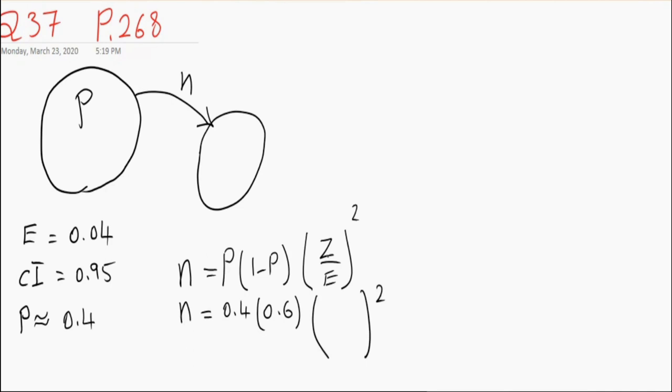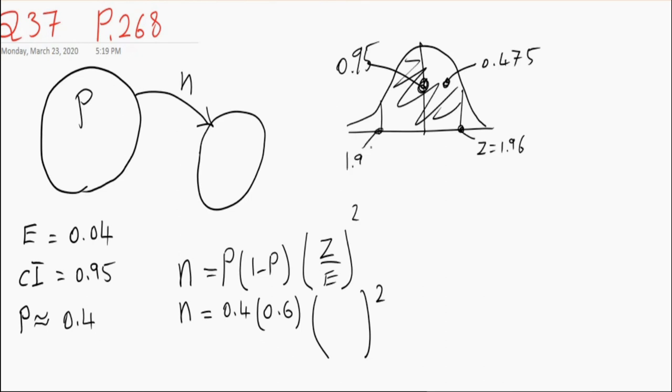The best estimate that we have is 0.4 multiplied by 0.6. And now in a normal distribution we want to have 95% confidence. Therefore this area should be 0.95. Therefore half of it should be 0.475. Therefore we have to go 1.96 standard deviations above and 1.96 standard deviations below the mean. Therefore Z is 1.96. And the error is 0.04. And the size of the sample that we want is at least 576.24.